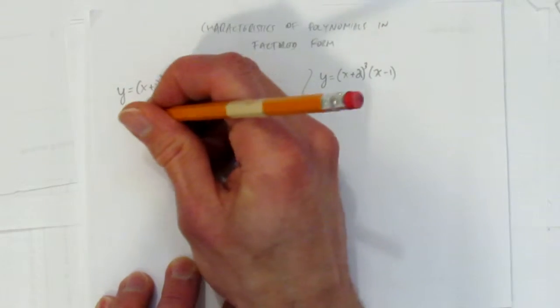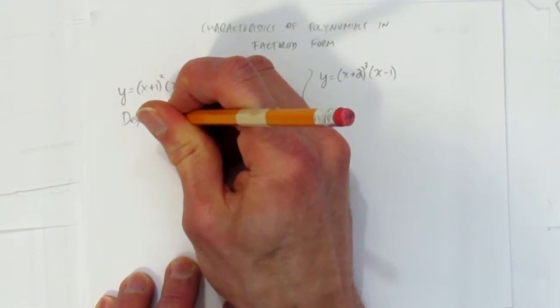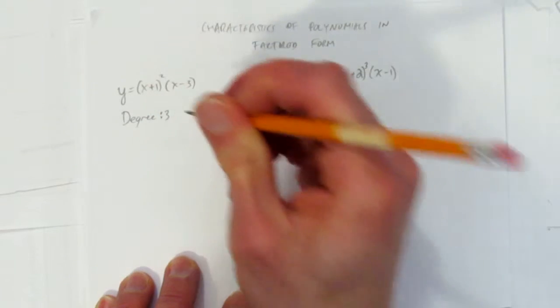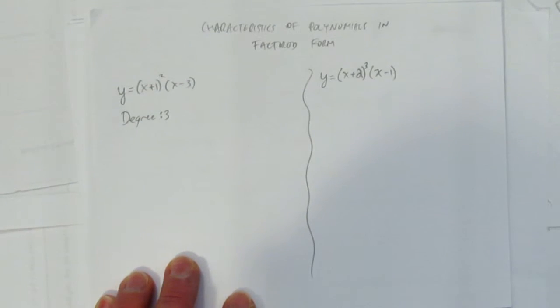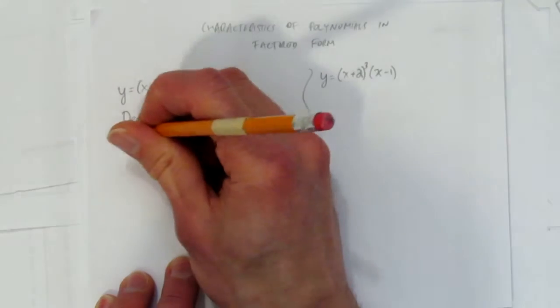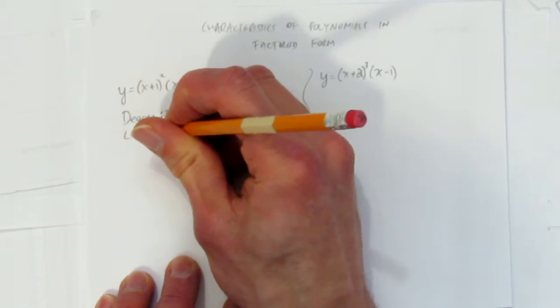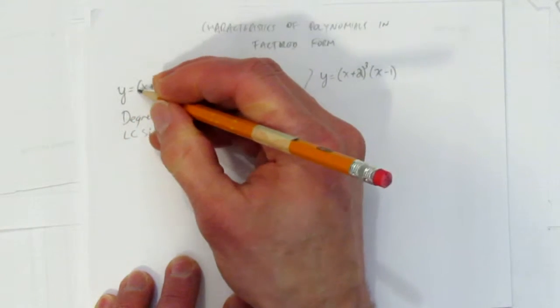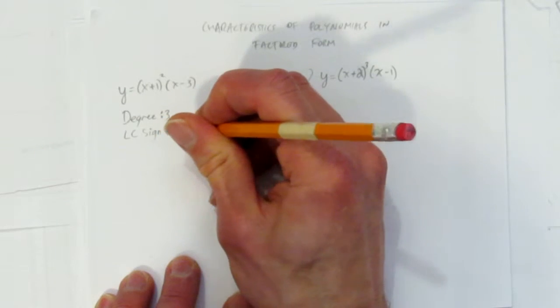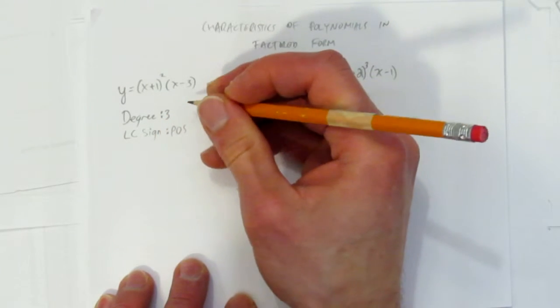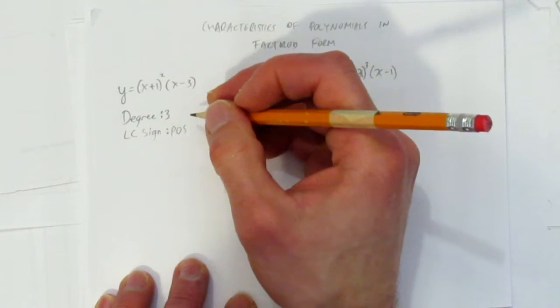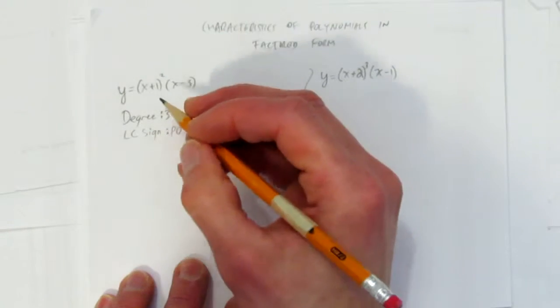So, recognize that this function, its degree is 3, or it's a cubic. And we can say a little bit more, too. We know its leading coefficient sign, that is, the coefficient in front of the brackets here, is positive. So we know what it's going to look like, a positive-looking cubic.